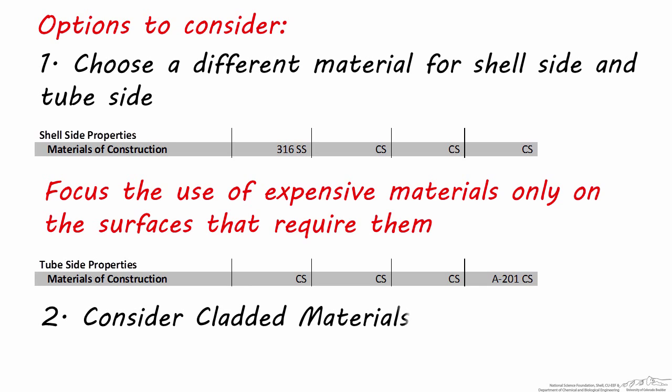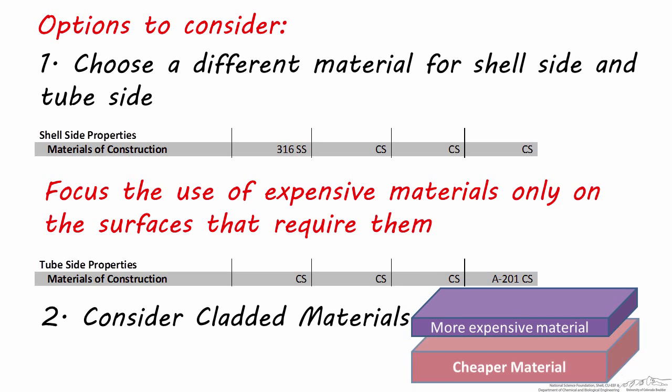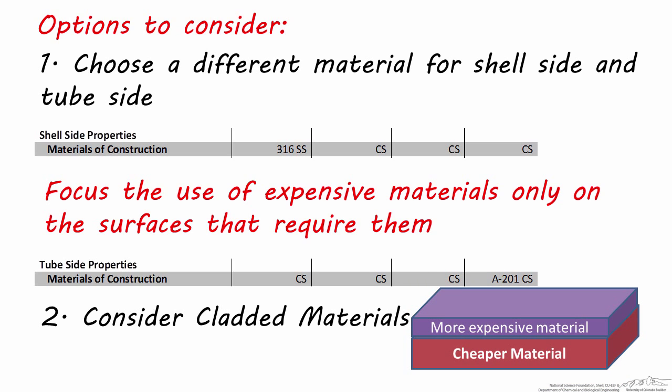Second, consider using cladded materials if possible to save on initial heat exchanger capital costs. Cladded materials feature a more expensive material as a top layer, laminating a cheaper material below. Using cladded materials ensures fluids are in contact with a less reactive surface, but still have the durability and thickness of a cheaper material below. Keep in mind cladded materials should be inspected more frequently to check for material integrity and to be sure corrosion is not occurring.